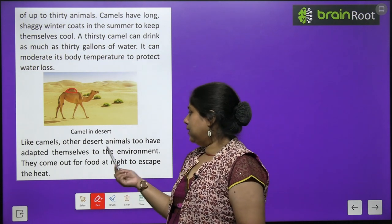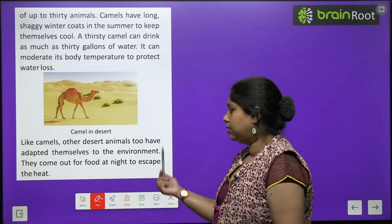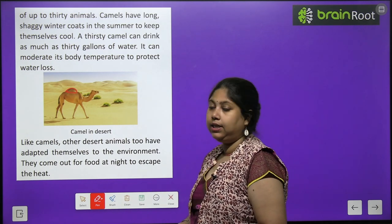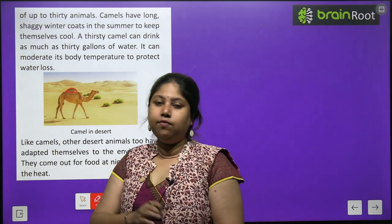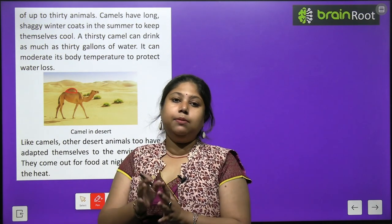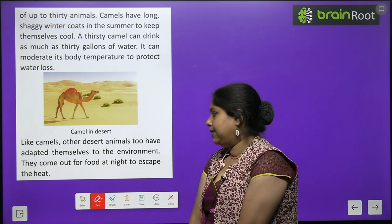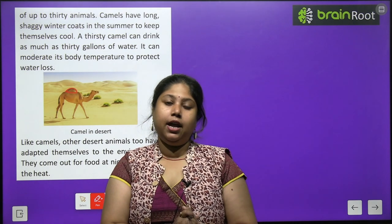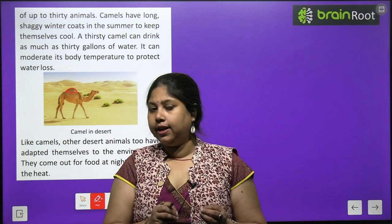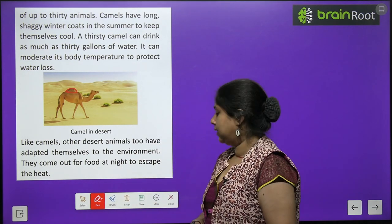Like camels, other desert animals have also adapted to the environment. They come out for food at night to escape the heat — ye chhote-chhote insects aur janwar raat ko bahar aate hain khana dhundhne ke liye, aur din mein mitti ke andar rahna pasand karte hain.